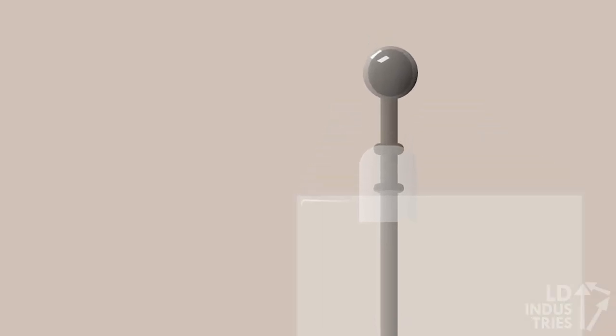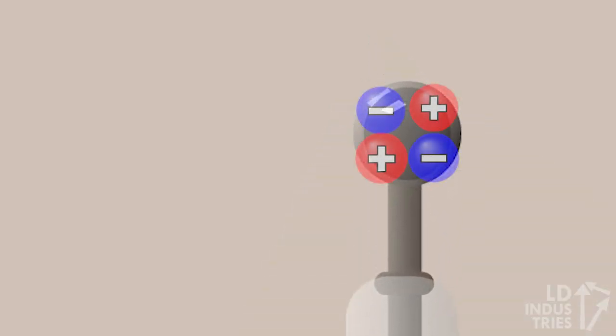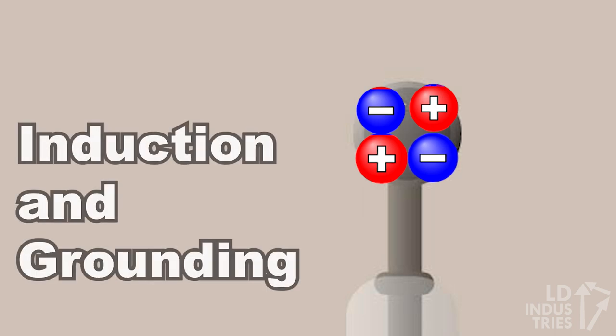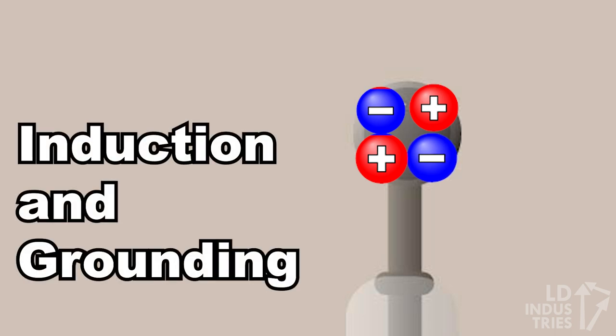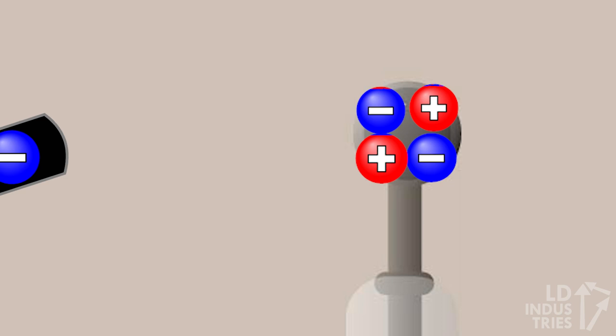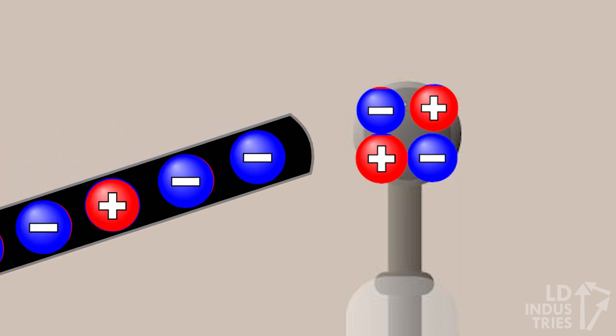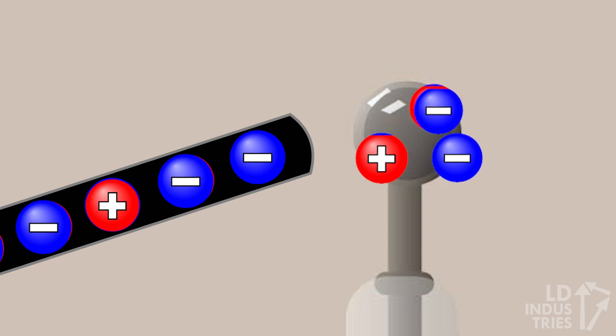In a final experiment, we can also cause the neutral electroscope to gain a charge without ever touching it to the rod. This process is called induction and grounding. Here we bring a charged rod, in this case it's negative, close to the neutral electroscope. The electrons in the electroscope will repel away from the rod and migrate to the right side of the electroscope.